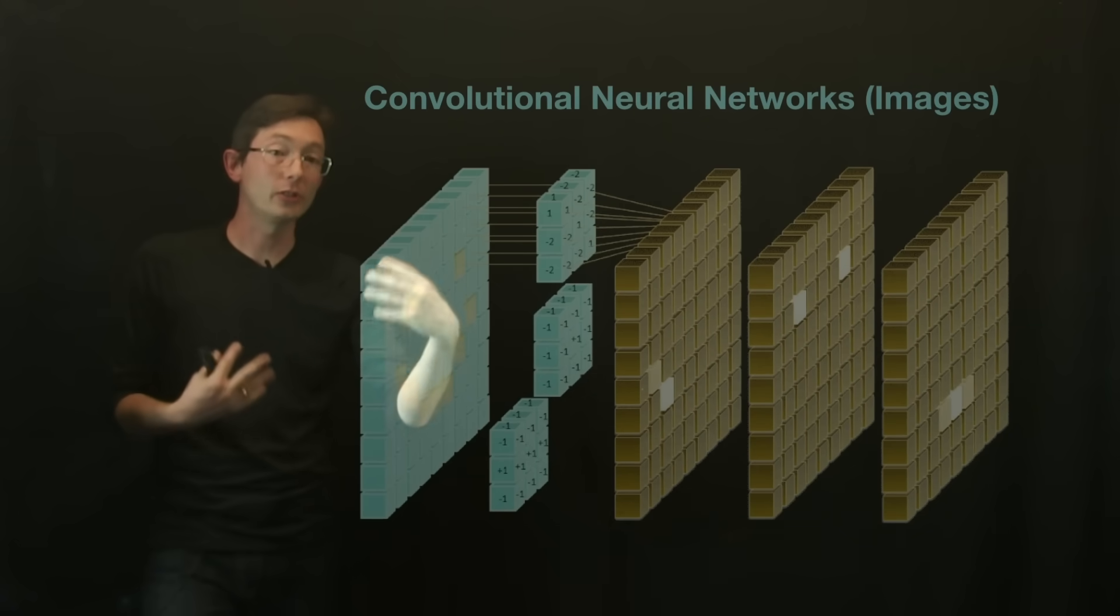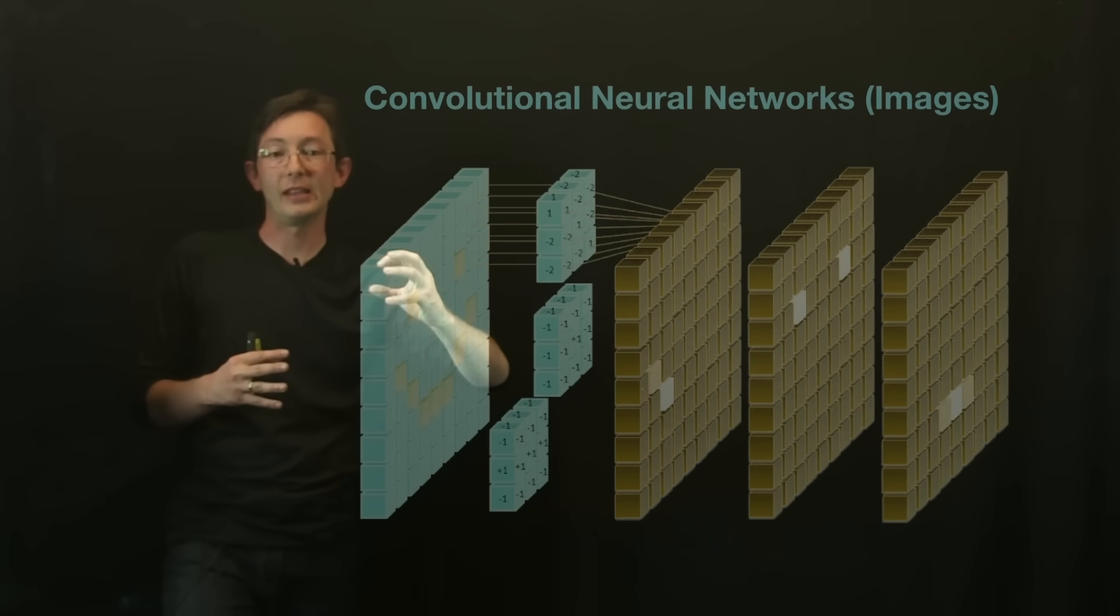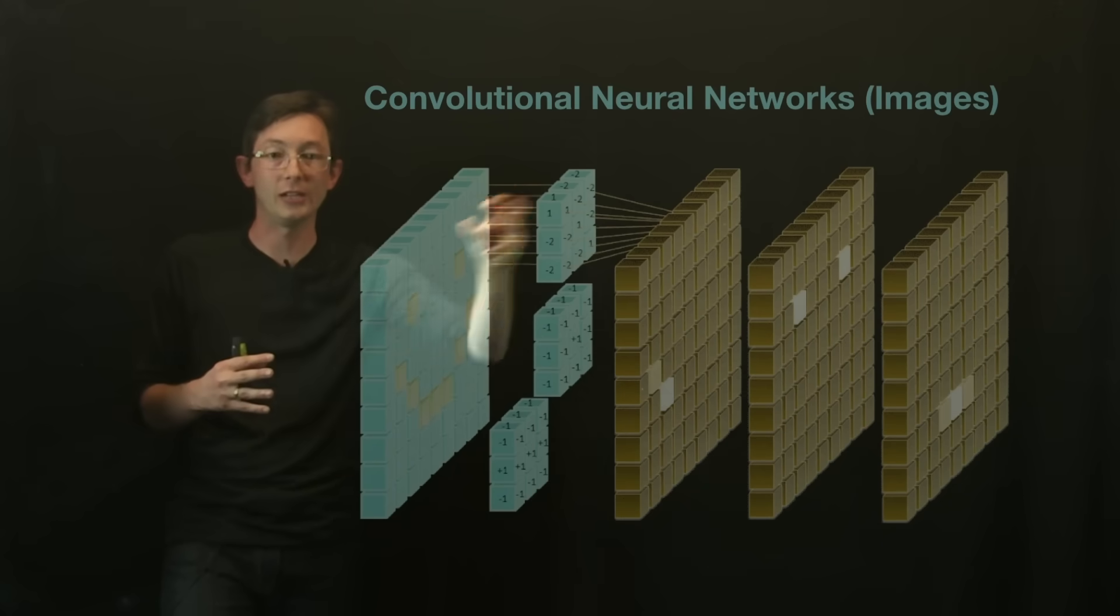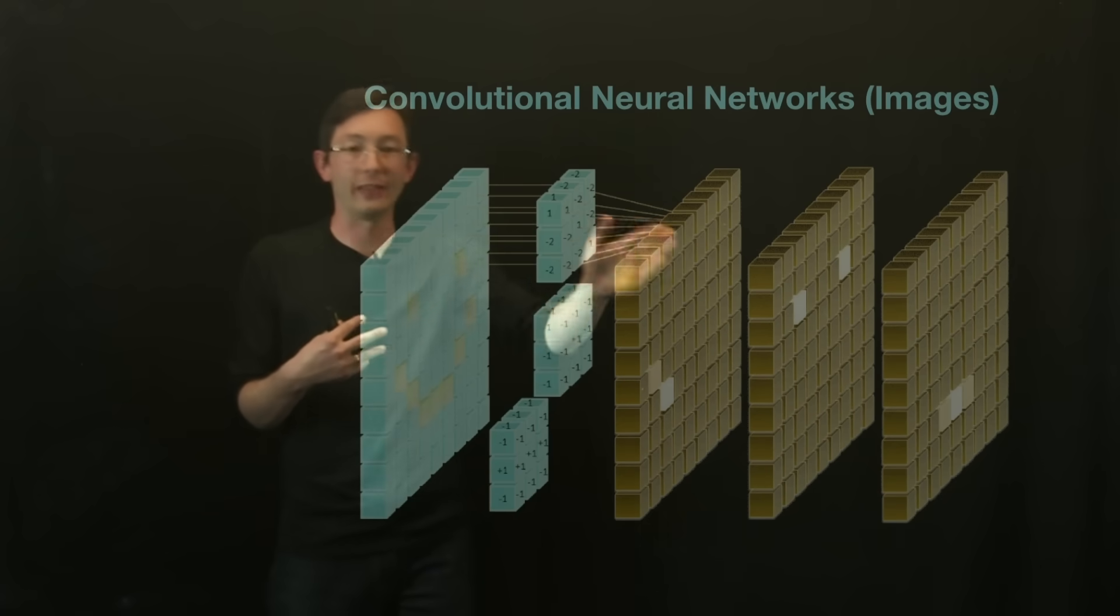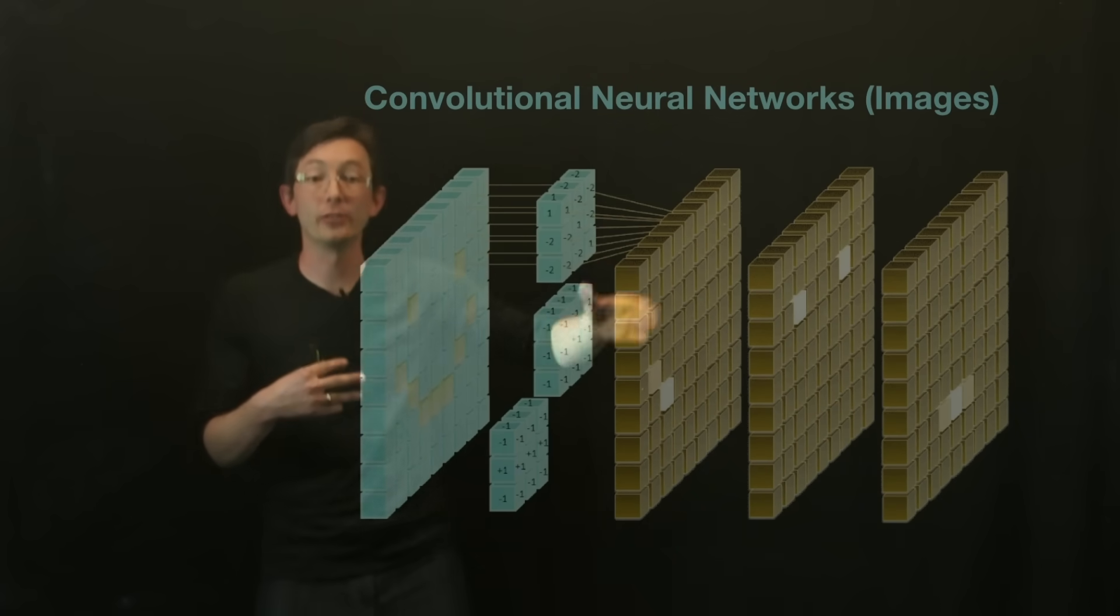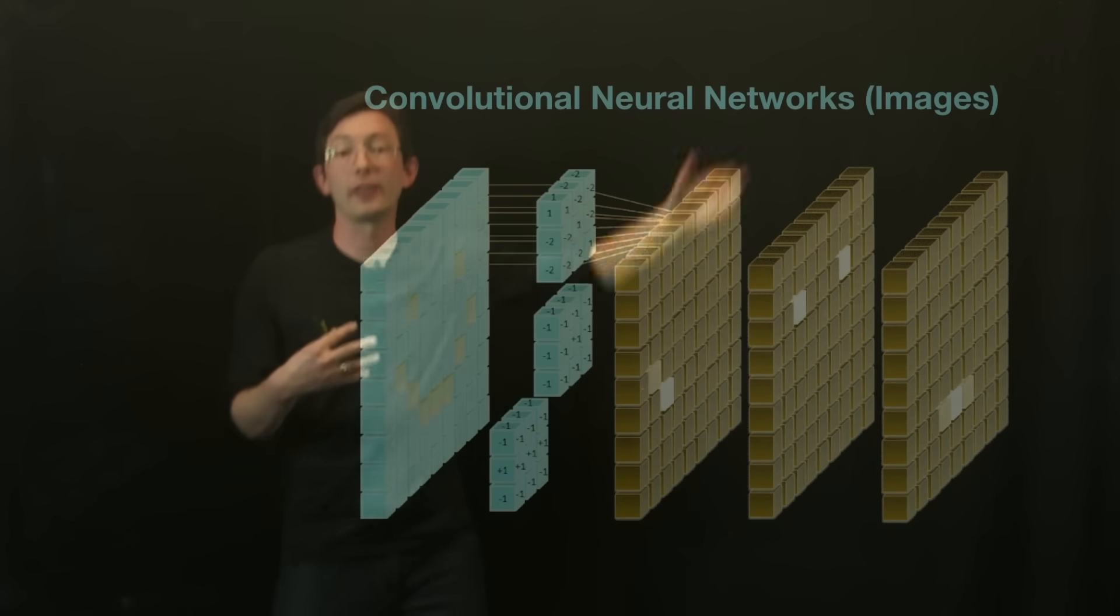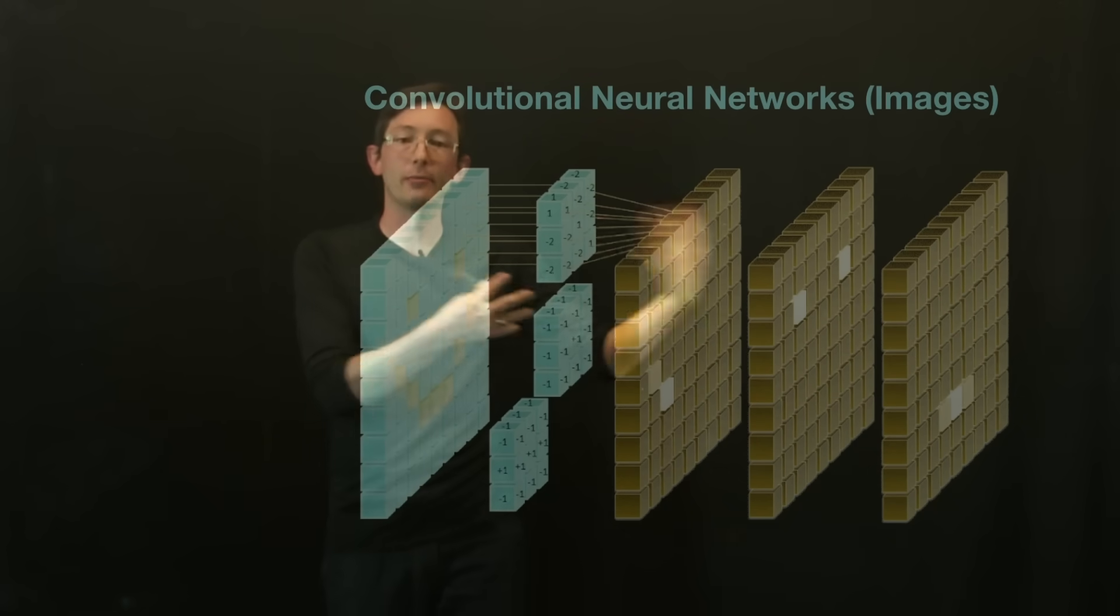What a convolutional neural network does is it has these convolutional layers that basically take a mask and slide it across the image doing local computations in local patches. What you might be able to do is pull out edges or features. You would run that through a convolutional layer and pull out these edges, then you might run those through another convolutional layer and another convolutional layer. You stack these convolutional layers and then you do some processing on them.